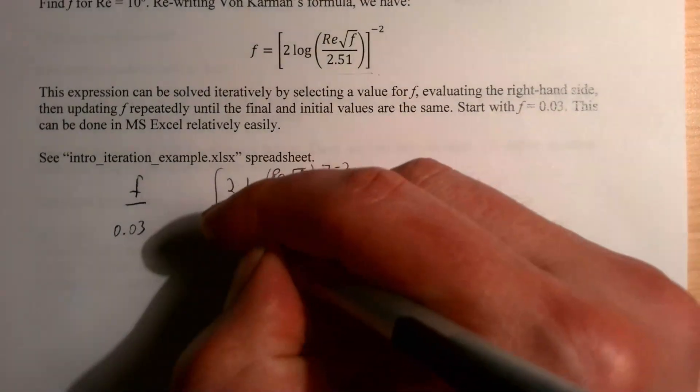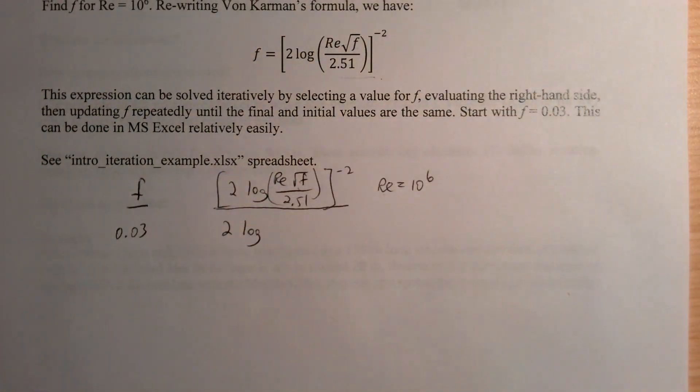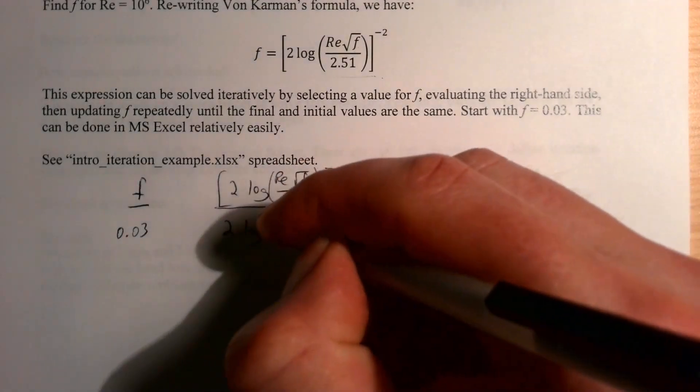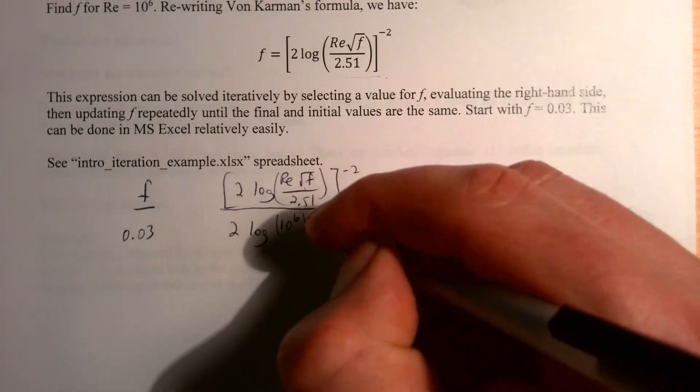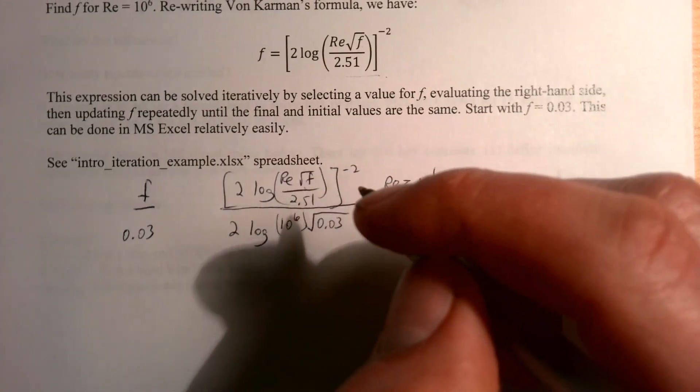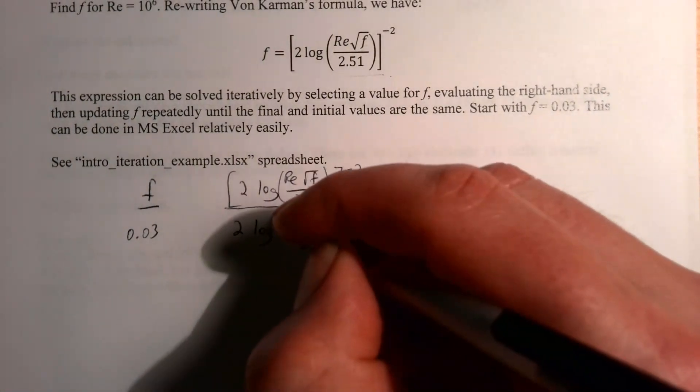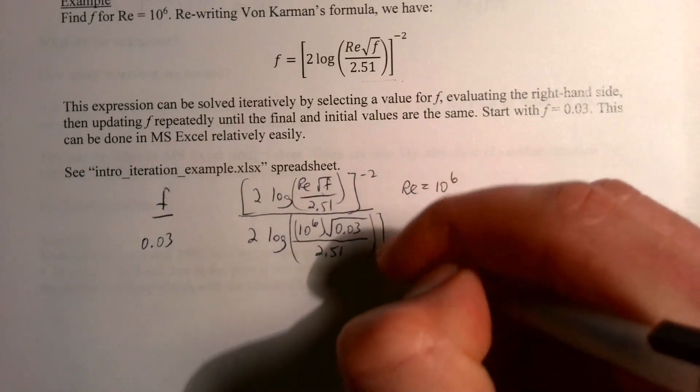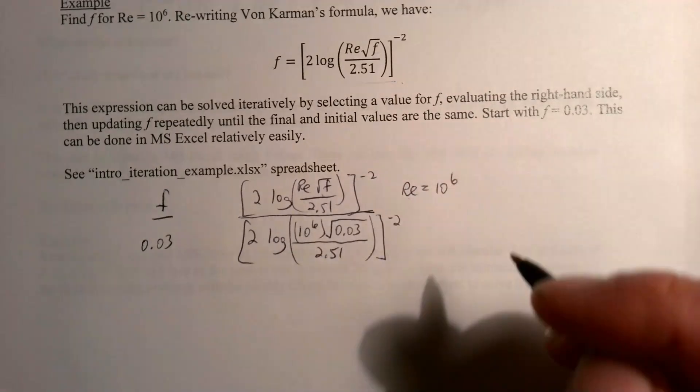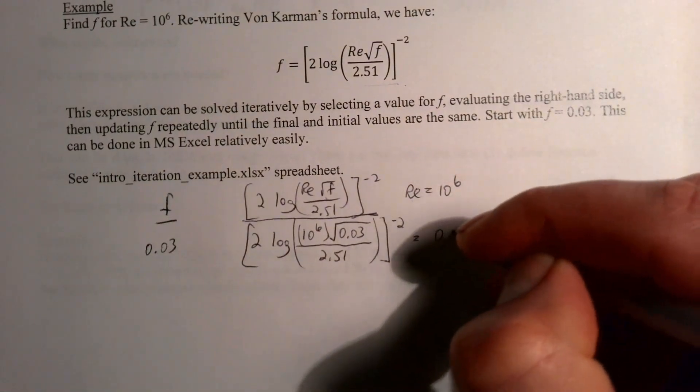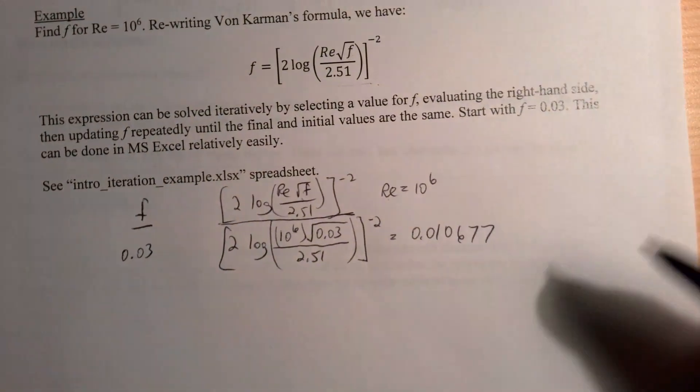I'll just kind of write out the calculation you would do. You can do this by hand—you can iterate here manually by hand. So this is 10 to the 6 for the Reynolds number, and then we have 0.03 square rooted, and then we have 2.51, and then all of that to the negative 2 power.